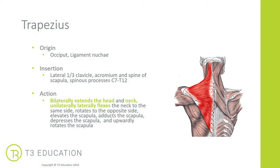The trapezius also covers rotation to the opposite side, and can elevate, adduct, depress, and upwardly rotate the scapula. So it has a lot of movement potential.